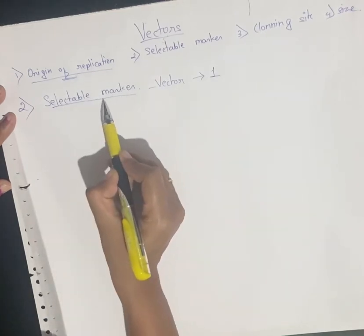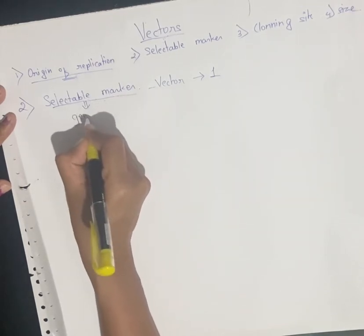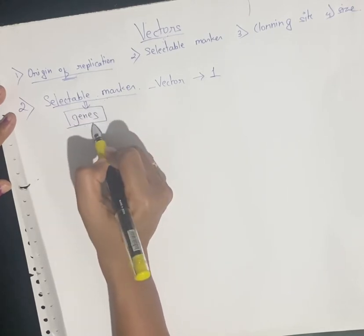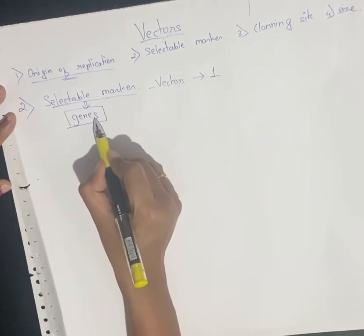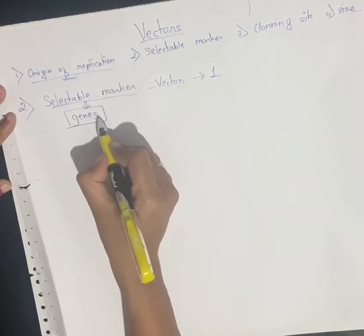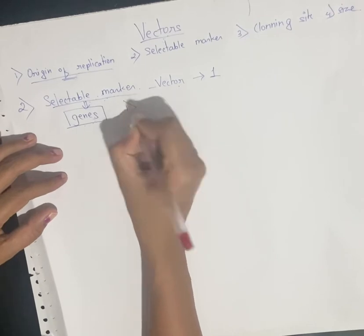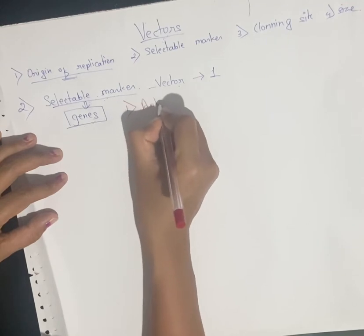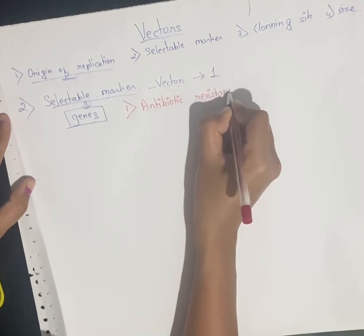Which selectable markers are present in vectors? They are genes — there should be at least one gene acting as a selectable marker. There are several such genes, but I am going to tell you about two. The first gene that acts as a selectable marker is the antibiotic resistance gene.